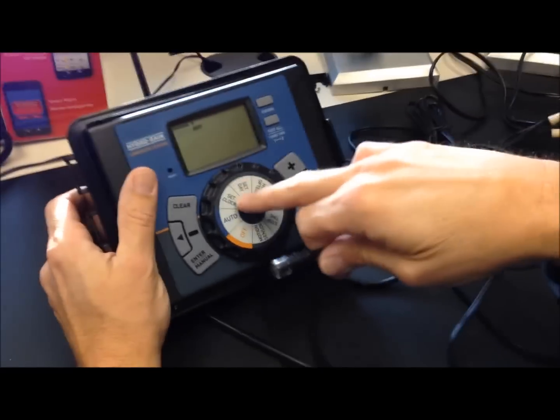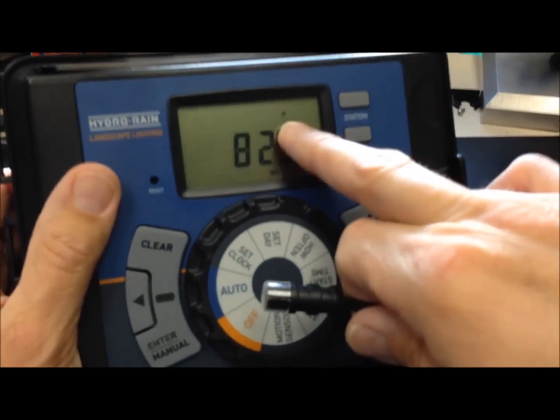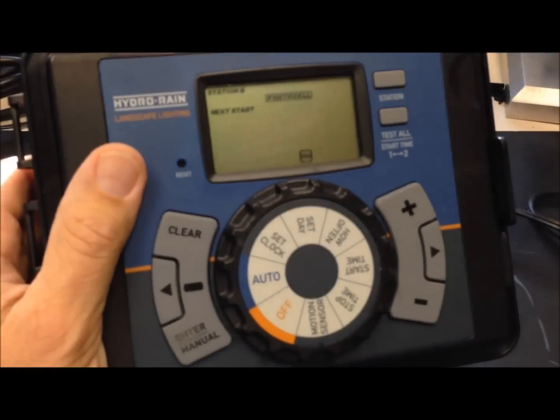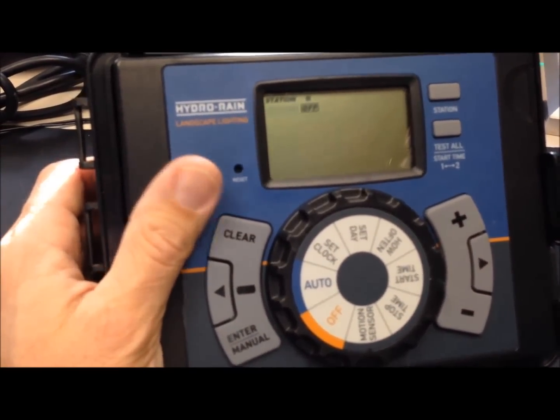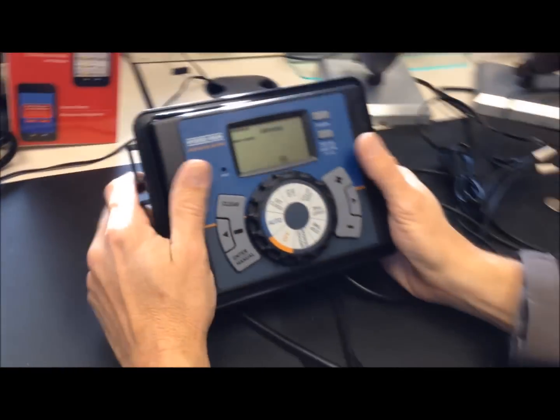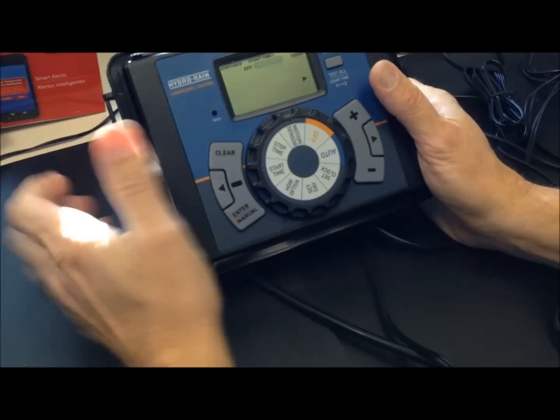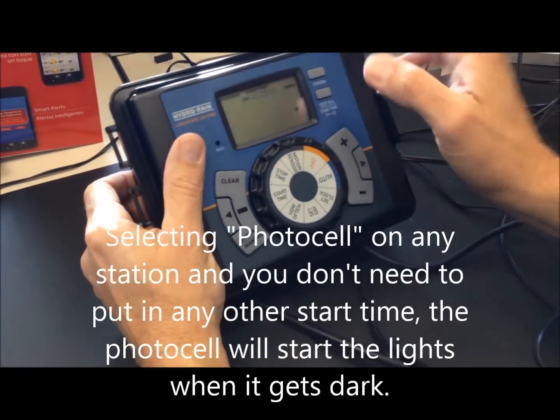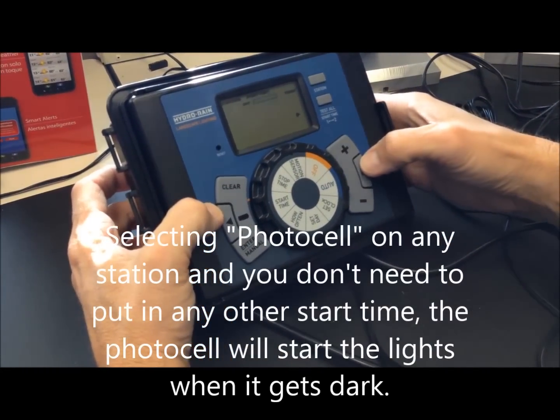Notice we're showing here, while in auto mode, we show a sun symbol, which means it's detecting light. When it goes dark, it will show a moon. Back to programming. When you set your start time, you can choose the photocell, which means you don't have to set any times at all, at least for the start time. Or you can go timed.